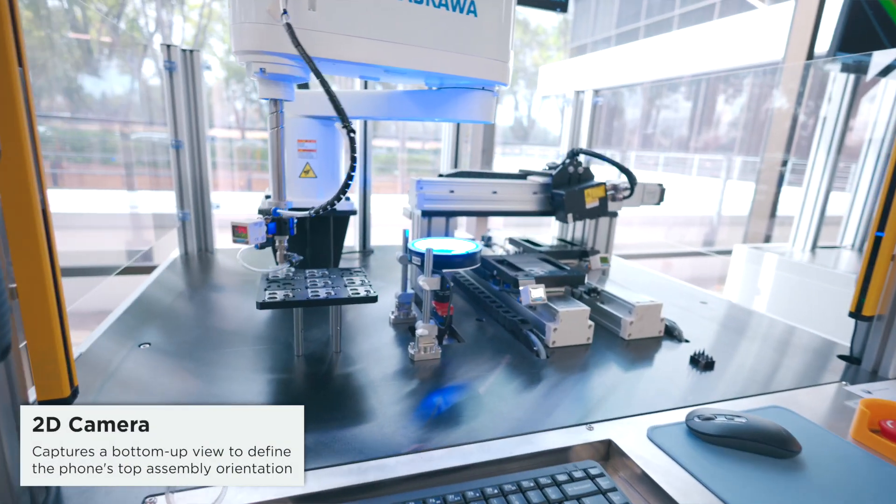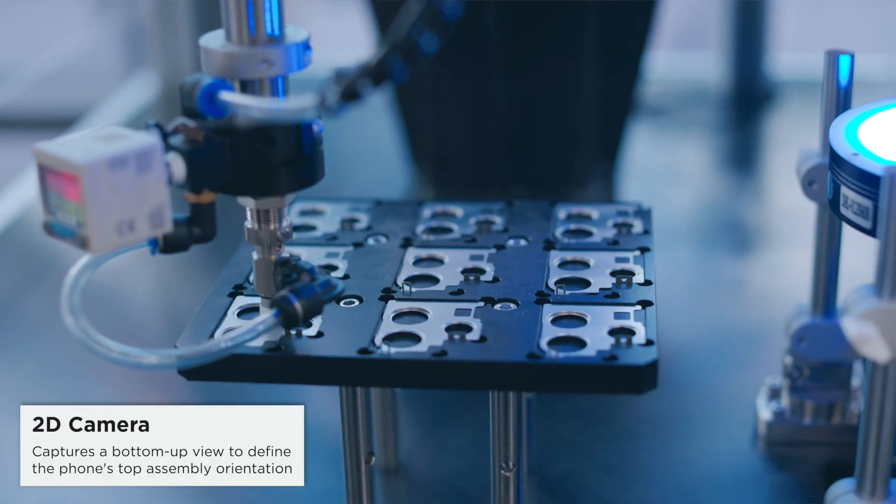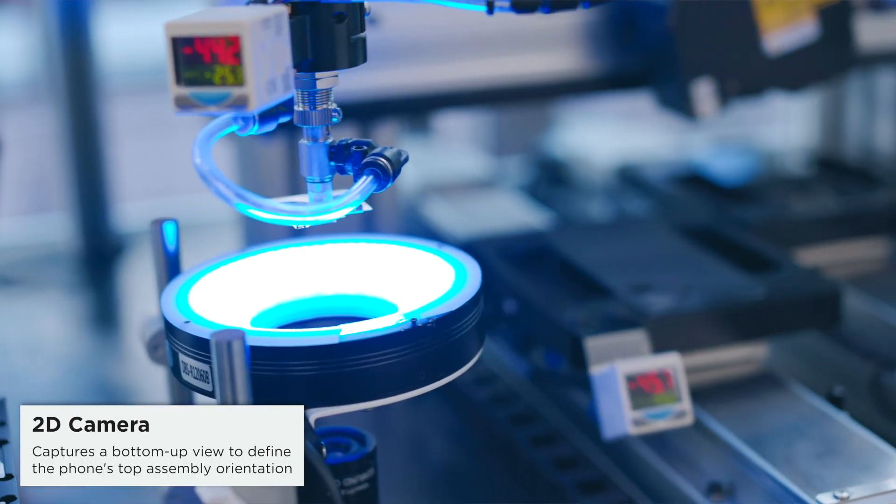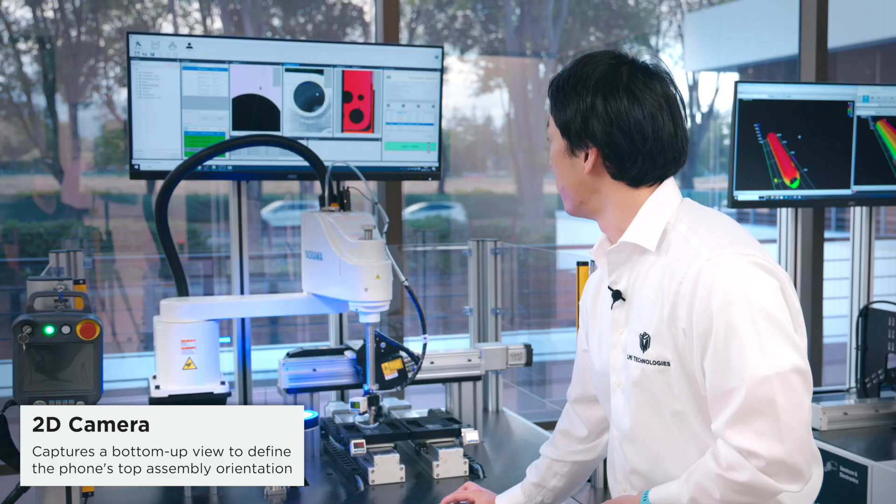So the pipeline of the system is the robot will pick up the frame first and it'll come to the 2D station and you can see the lighting from the ring light get rid of the impact from ambient light. So after we take the image, we process the 2D image over here.